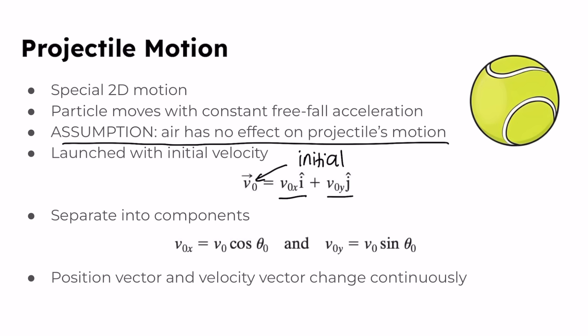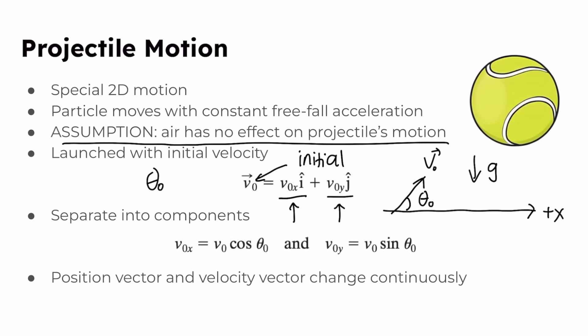These components — the initial velocity in the x and y directions — can be found simply by knowing the angle theta naught between the velocity vector and the positive x direction. Let's say the ground indicates our positive x direction, and theta naught is the angle between the velocity vector and that positive x direction. During its two-dimensional motion, the projectile's position vector r and velocity vector will change continuously, but its acceleration g is constant and will always be directed vertically downwards.